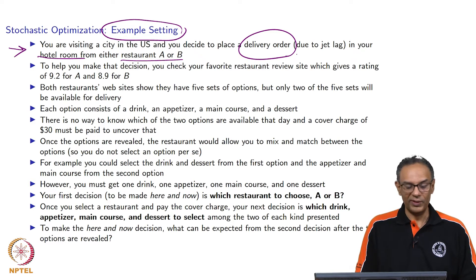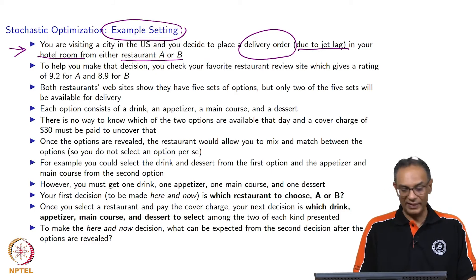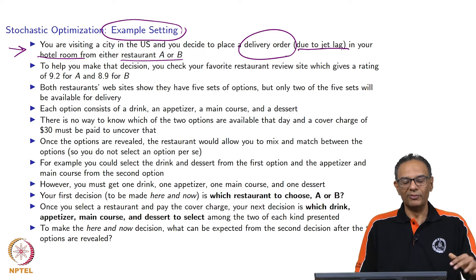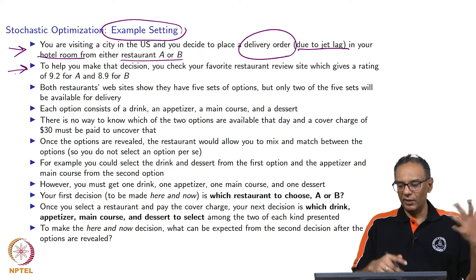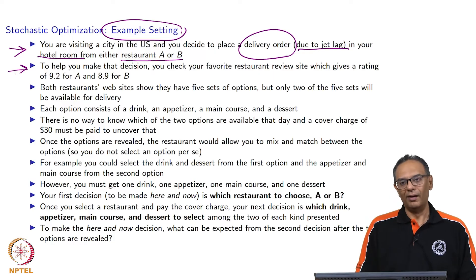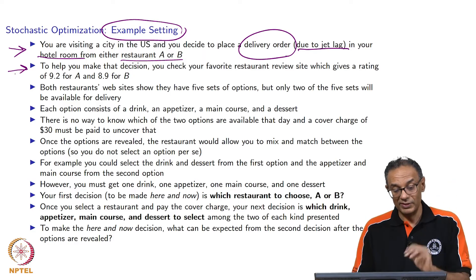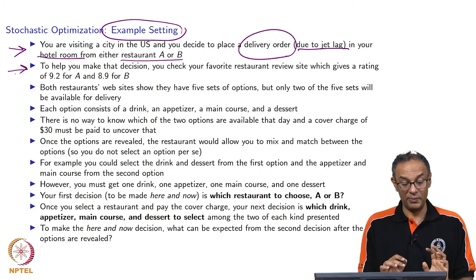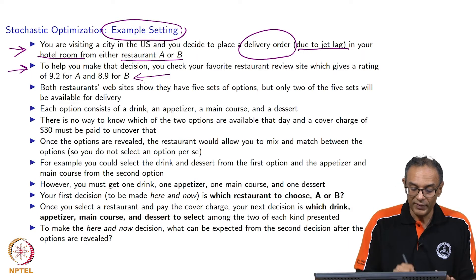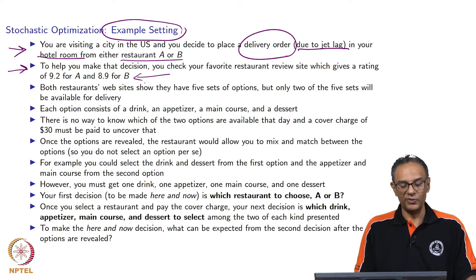You might wonder why you want to place a delivery order. Maybe you are so cold you don't want to go out, or more commonly, if you have just landed in the U.S., you are likely to have jet lag, and you may want to just sit in your room and have food delivered. So you look up your favorite restaurant review site. The two restaurants have reviews of 9.2 and 8.9 respectively on a site that rates out of 10 — 9.2 for A and 8.9 for B.